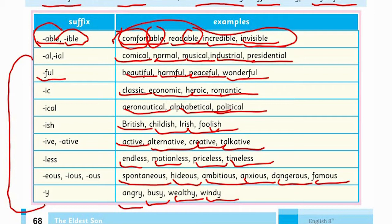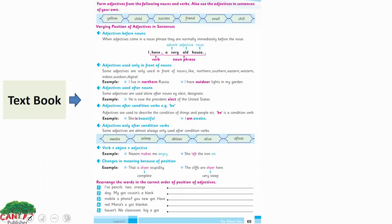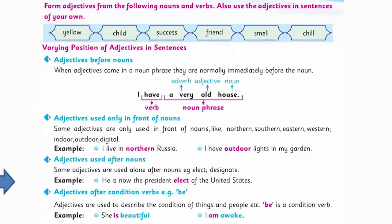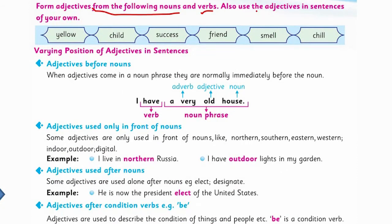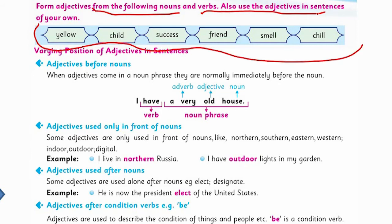You can see the suffixes we have added to make adjectives from nouns and verbs. Now, form adjectives from the following nouns and verbs, and also use the adjectives in sentences of your own. These are the words which are nouns and verbs — you have to make them into adjectives.